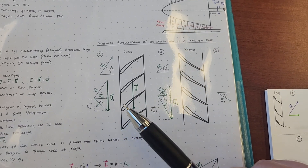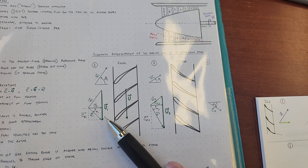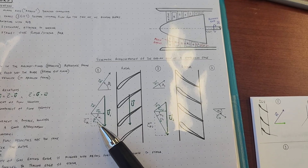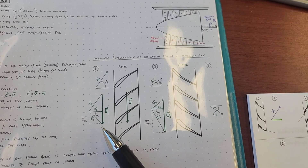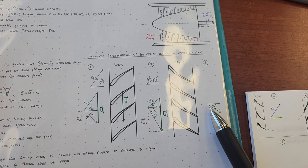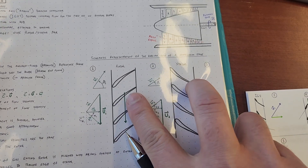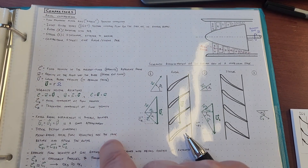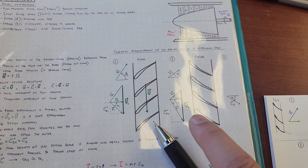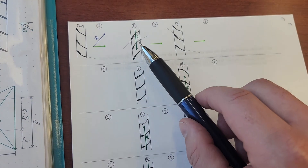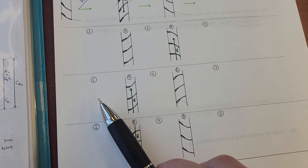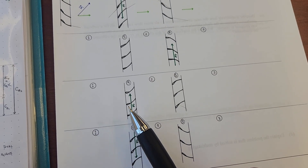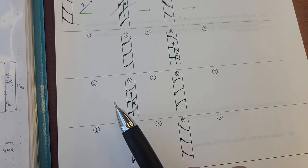And why this is confusing — the example he used in class — is he does not say, and you only get to know this from reading the book, that this C vector here only exists because this is part of a repeated stage. This C vector is the same as this C vector on this side, because it's assuming there's another combination of these together. He doesn't say that in his notes, he doesn't say that in class, he expects you to figure that out on your own.